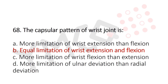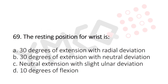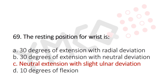Question 69: The resting position for the wrist is — Option A: 30 degrees of extension with radial deviation, Option B: 30 degrees of extension with neutral deviation, Option C: neutral extension with slight ulnar deviation, Option D: 10 degrees of flexion. The answer is Option C, neutral extension with slight ulnar deviation.